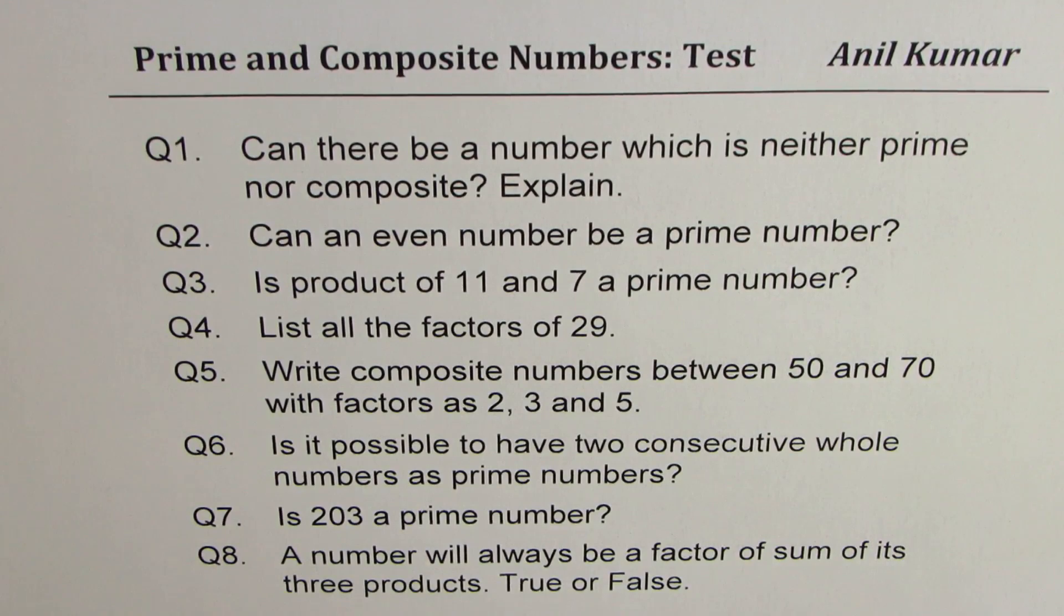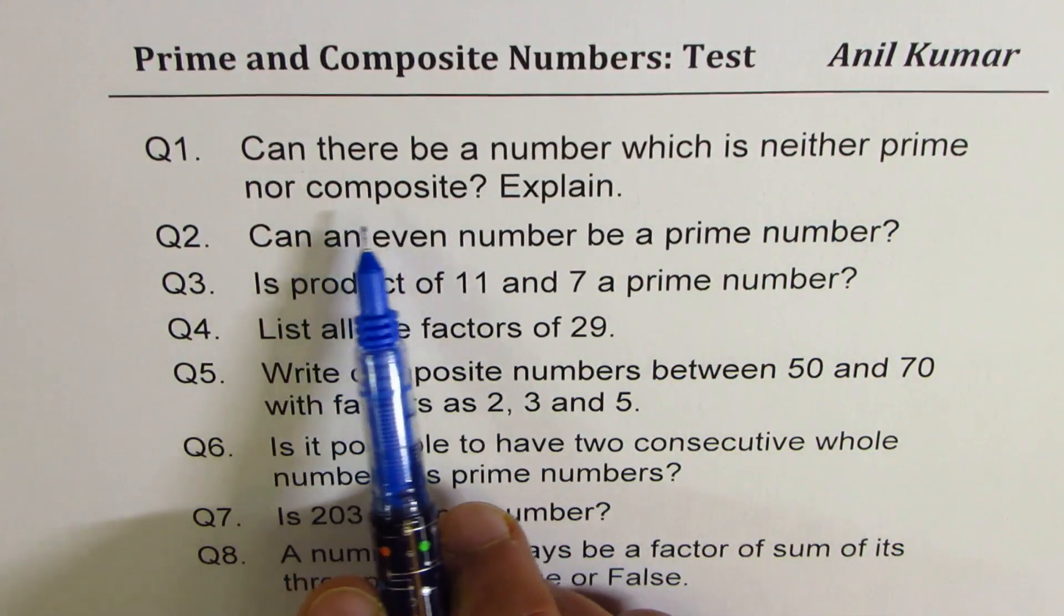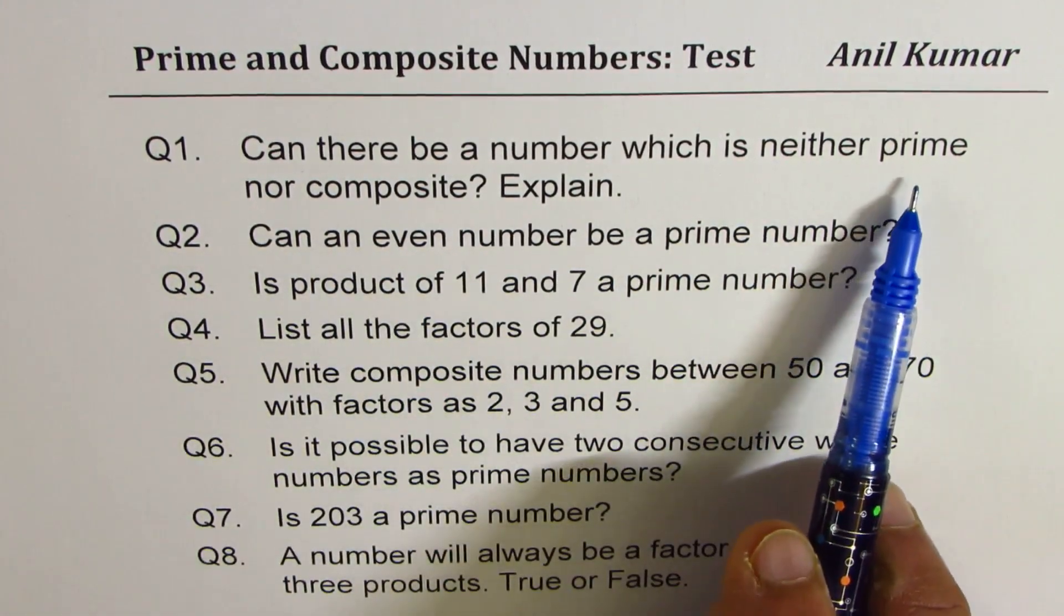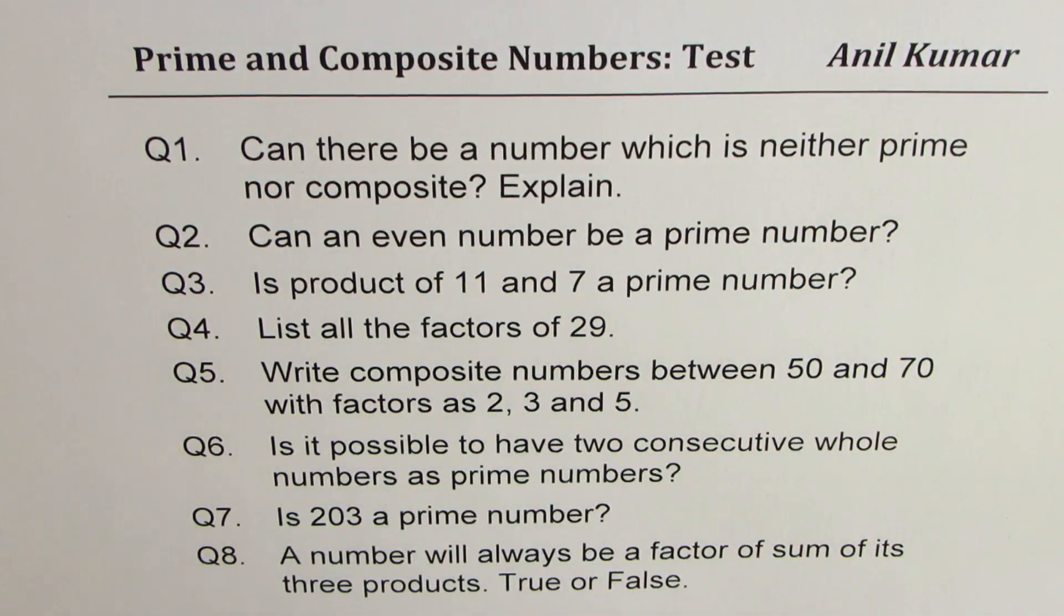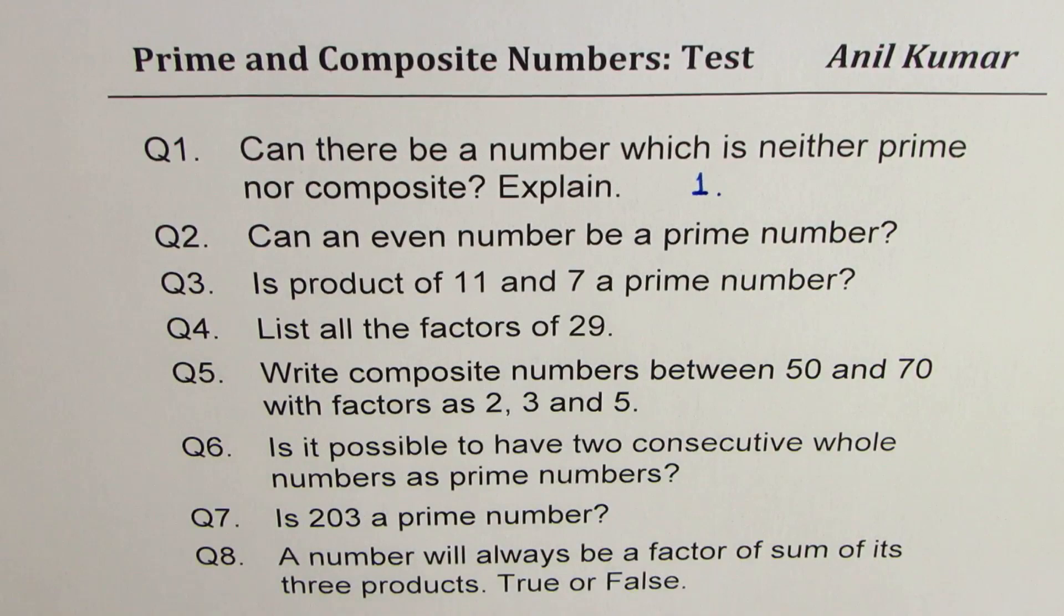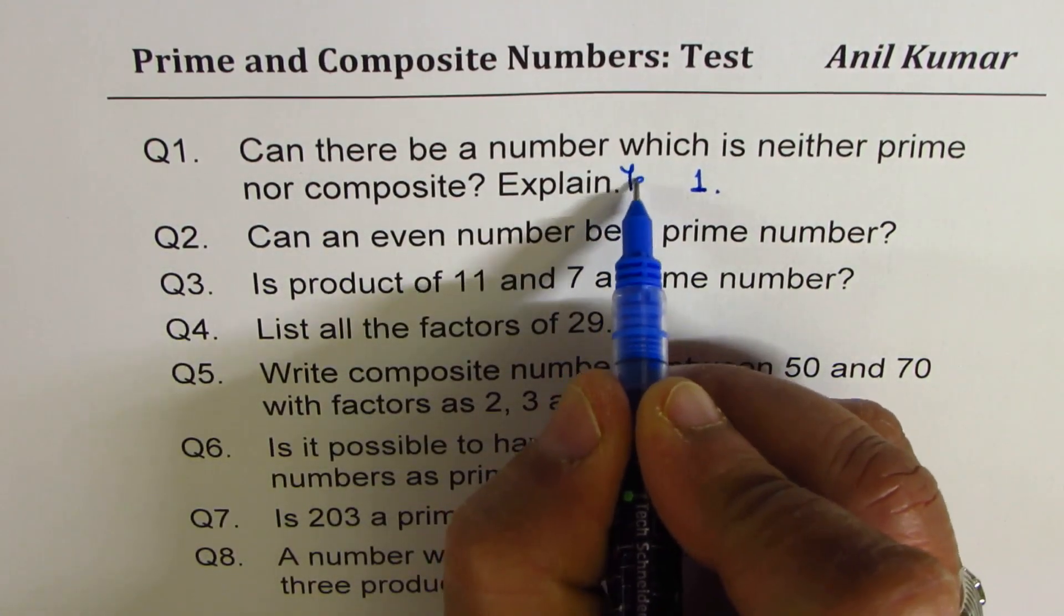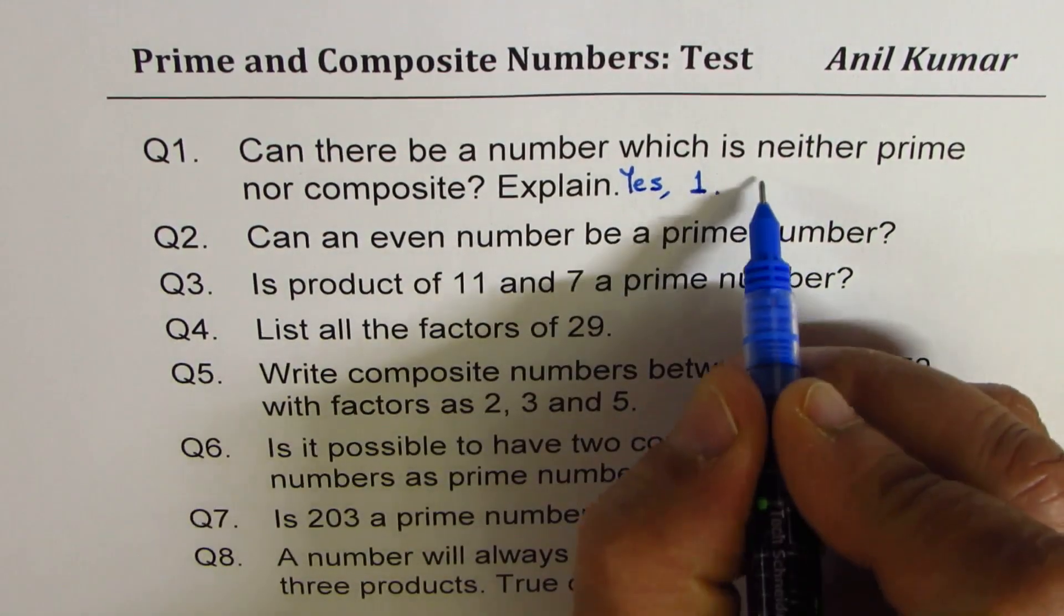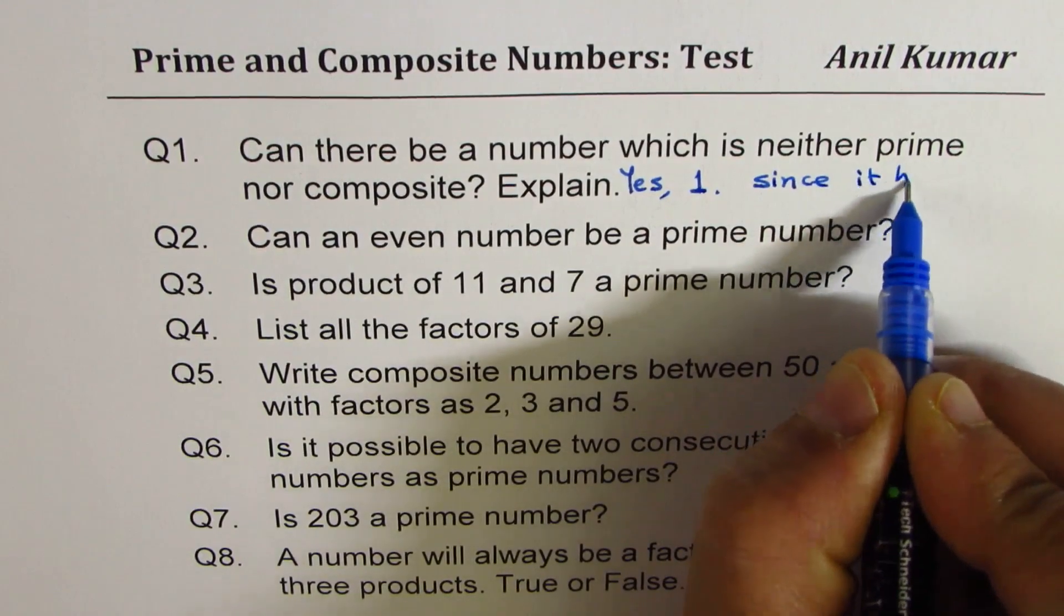I hope you got most of the answers. Let's answer them one by one. Can there be a number which is neither prime nor composite? Prime numbers have how many factors? Two. And composite numbers have more than two. We are left with number 1, which has only one factor. So the answer is yes. An example is 1 since it has only one factor, which is number 1 itself.